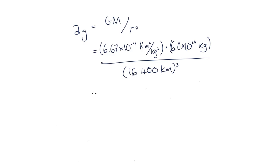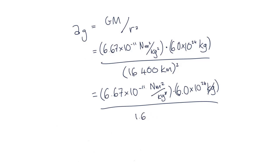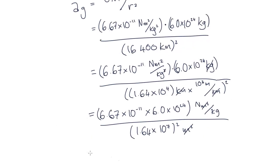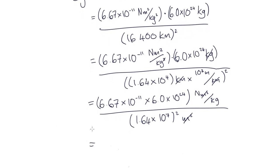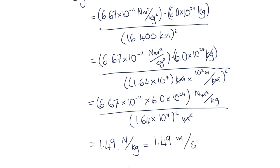Putting our kilometers into meters and canceling out units, plugging this into our calculators, we get 1.49 with units newtons over kilograms. Since newtons is kilogram meters per seconds squared, our answer is 1.49 meters per second squared.